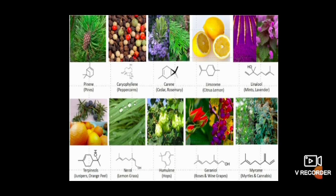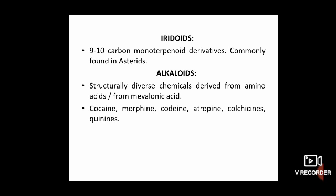This is a picture of the plants showing terpenes, and these are the different terpenes found in plants. Iridoids are 9-10 carbon monoterpenoid derivatives. They are commonly found in plants grouped as asterids.